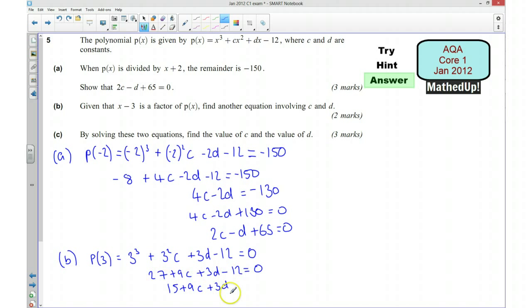And because it's a factor, that's going to be equal to 0. So that means 27 plus 9c plus 3d minus 12 equals 0. So we're going to have 15 plus 9c plus 3d, I've just subtracted that 12, equals 0. And I'm going to write it in a similar form, and 3 is a common factor, so that's going to be 3c plus d plus 5 equals 0. Okay, so this is our other equation involving c and d, 3c plus d plus 5 is equal to 0. Now part c.